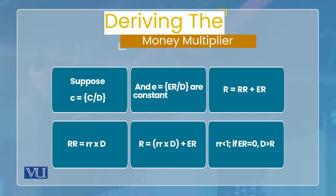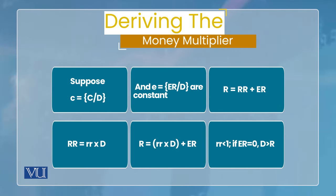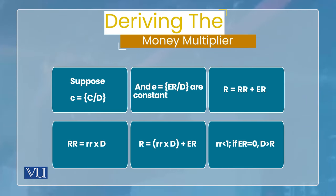یہاں سے ایک چیز clear ہوتی ہے: اگر excess reserves کو zero کر لیں — جیسا پچھلی example میں کیا تھا — تو R = rr × D۔ چونکہ rr is always less than 1 (required reserve ratio)، یہ equation بتا رہی ہے کہ R is equal to a fraction of deposits — اس کا مطلب ہے deposits are always greater than reserves۔